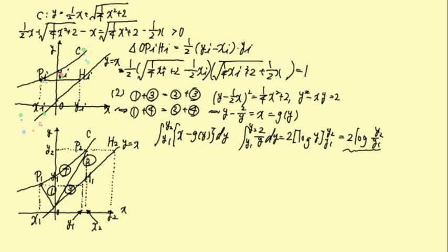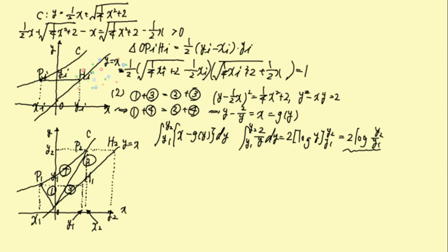今宣言したとおり、Piというものを設定したときに、xiがそのx座標、yiがy座標になりますね。x軸に平行な点を打ってやるhiが相手になるわけですが、yイコールX上にhiがあるわけですから、そうすると、このhiのx座標はyiということになります。